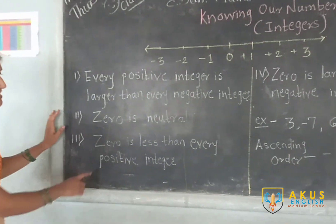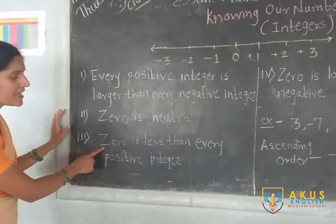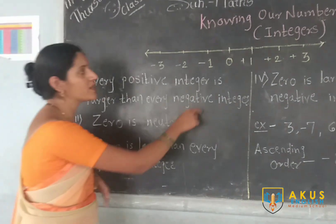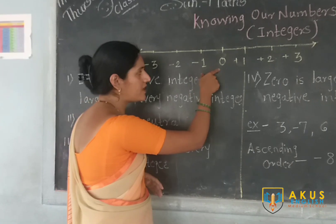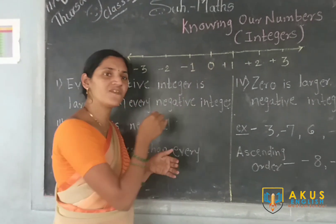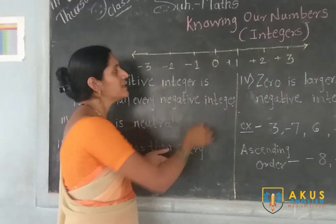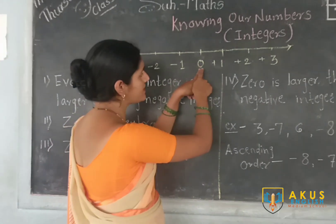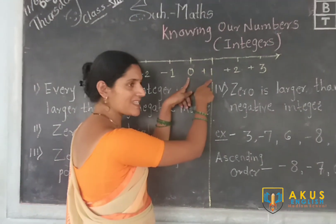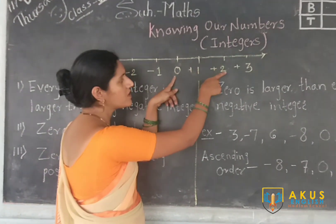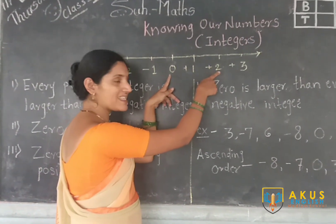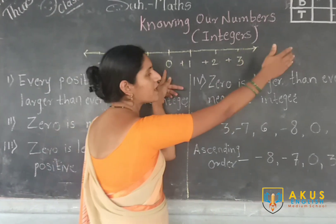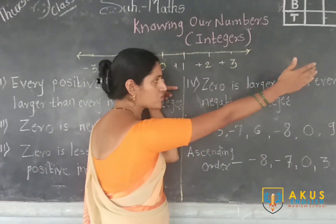0 is less than every positive integer. Though 0 is neutral, its value is always less than any positive integer. We can see that 0 is less than plus 1, 0 is less than plus 2, 0 is less than plus 3, plus 4, and so on.